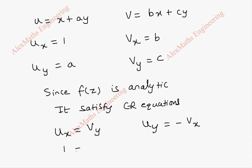So, we are going to take ux equal to vy, which gives us 1 equals c, so we got the value of one constant c. Again, coming to the second part, uy is a and equal to minus vx, which is equal to minus b.